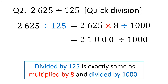2625 times 8 is 21000, divided by 1000. Divided by 1000 doesn't need to be calculated — you only need to move the decimal point 3 places to the left. We place the decimal point at the right end of 21000 and move it 3 places to the left, giving us 21.000. We don't need the decimal zeros, so the final answer is 21.